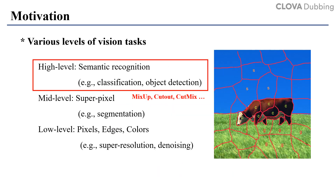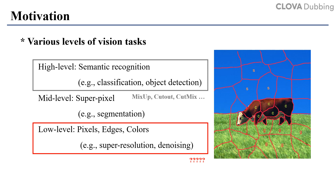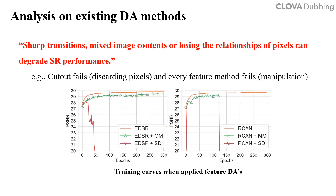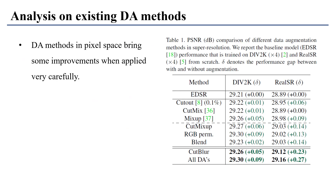Unlike high-level vision, there is surprisingly no work that studies data augmentation for low-level vision tasks. We found that, due to the characteristics of low-level vision, augmentation that seriously manipulates spatial information hurts the performance. Every feature augmentation method fails because it largely perturbs the spatial relationship of features, which have large receptive fields. On the other hand, every pixel augmentation method can bring some improvement when applied very carefully.